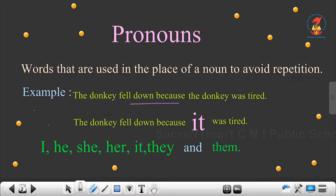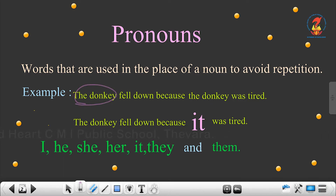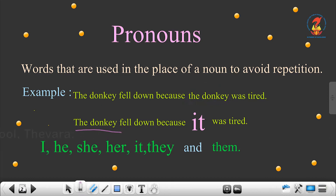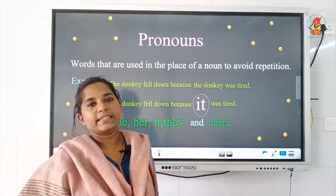The donkey fell down because the donkey was tired. Here, the first phrase is 'the donkey' and it is repeated in the second half of the sentence. So what can we rewrite? The donkey fell down because it was tired. So here, repetition is avoided. The donkey is replaced with the pronoun 'it' in the second sentence.